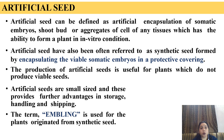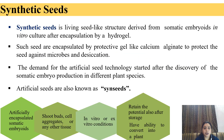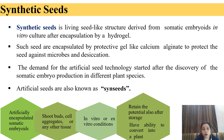Artificial seed is also known as synthetic seed, which is formed by encapsulating the viable somatic embryos in a protective covering. Its production is useful for plants which do not produce viable seeds. They are of small size which provides further advantages in storage, handling, shipping, and during transportation from one place to another. The term emblem is used for the plant originated from these synthetic seeds. They are seed-like structures derived from somatic embryos in in vitro culture after encapsulation by a hydrogel. These seeds retain their potential even after storage for a long time and have the ability to convert into a plant.